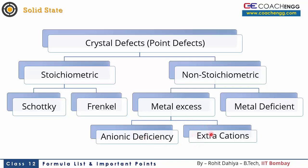The electron left behind gives a particular color to the crystal, and the locations of these electrons are called F-centers. Metal excess defect can also occur due to extra cations — for example, when ZnO is heated, some oxygen escapes, and extra Zn²⁺ ions and electrons occupy the interstitial voids. In metal deficient defect, an ion of one valency is replaced by an ion of another valency — for example, some Fe²⁺ is replaced by Fe³⁺ — making the substance overall neutral but disturbing stoichiometry. Practice numericals from NCERT and remember examples of Schottky, Frenkel, and anionic deficiency defects.